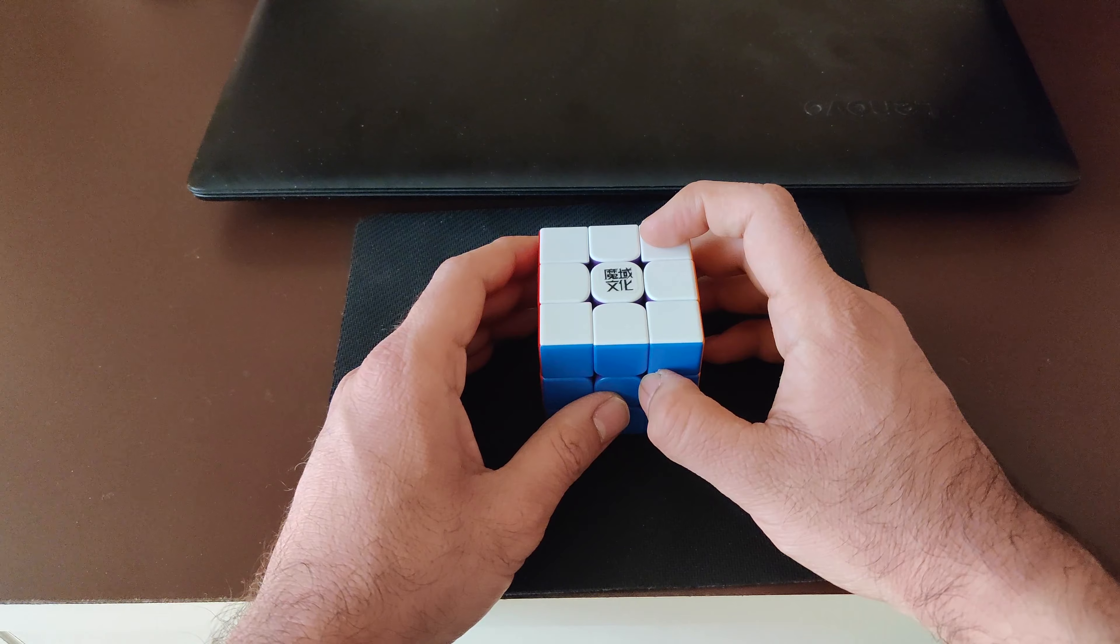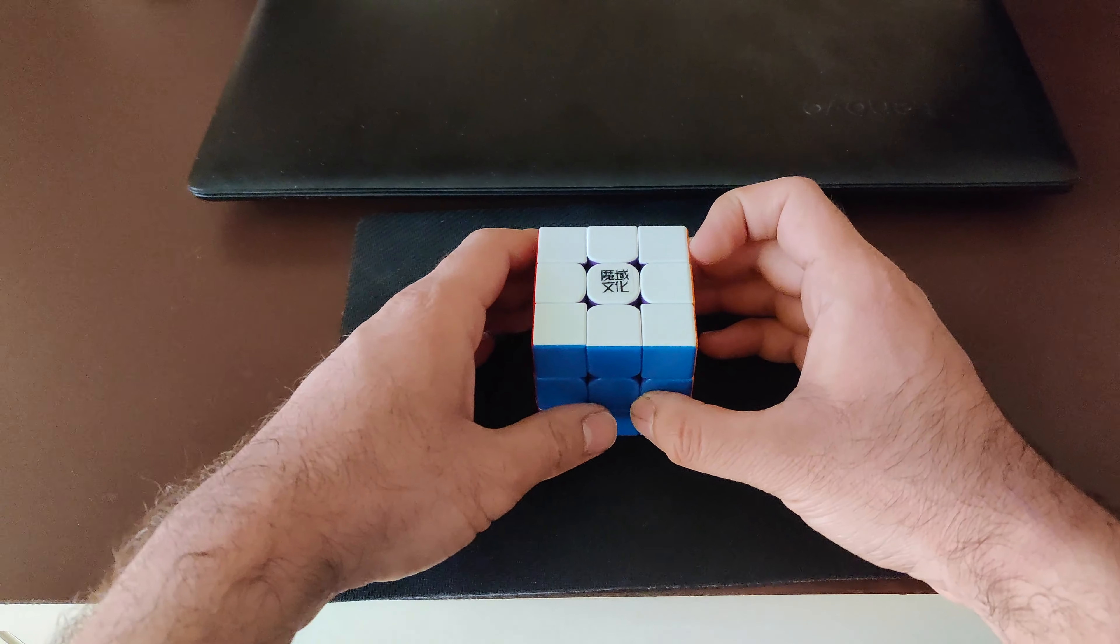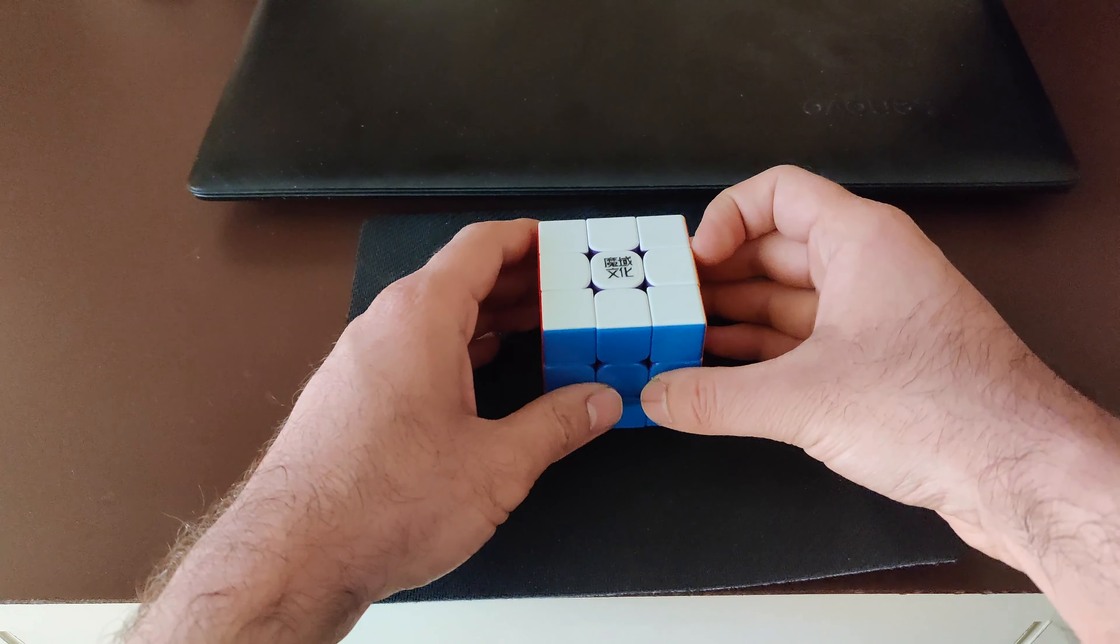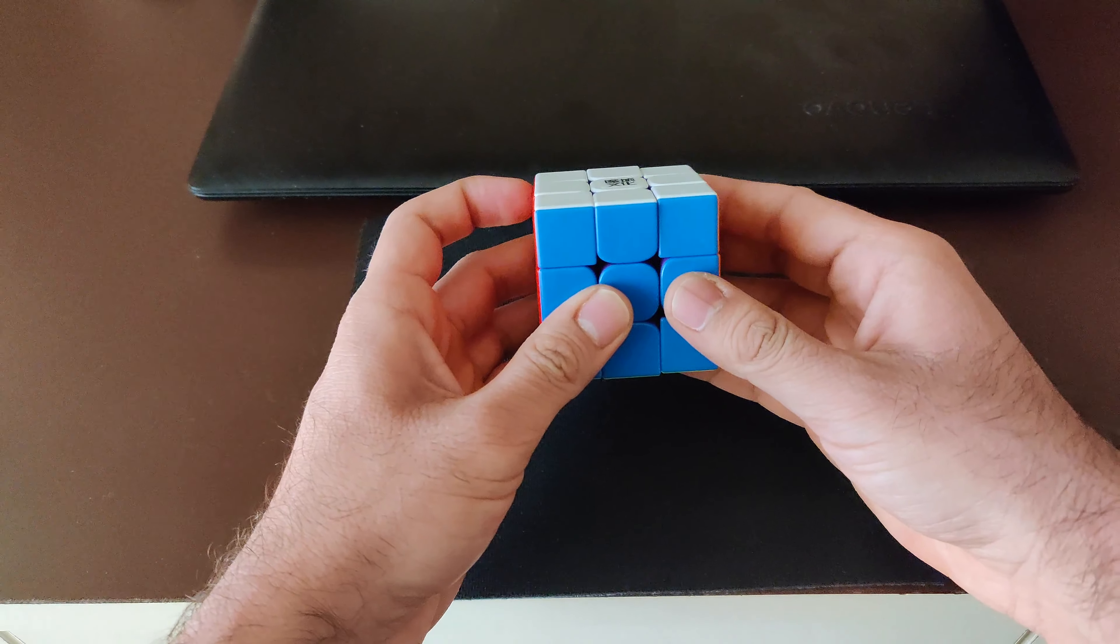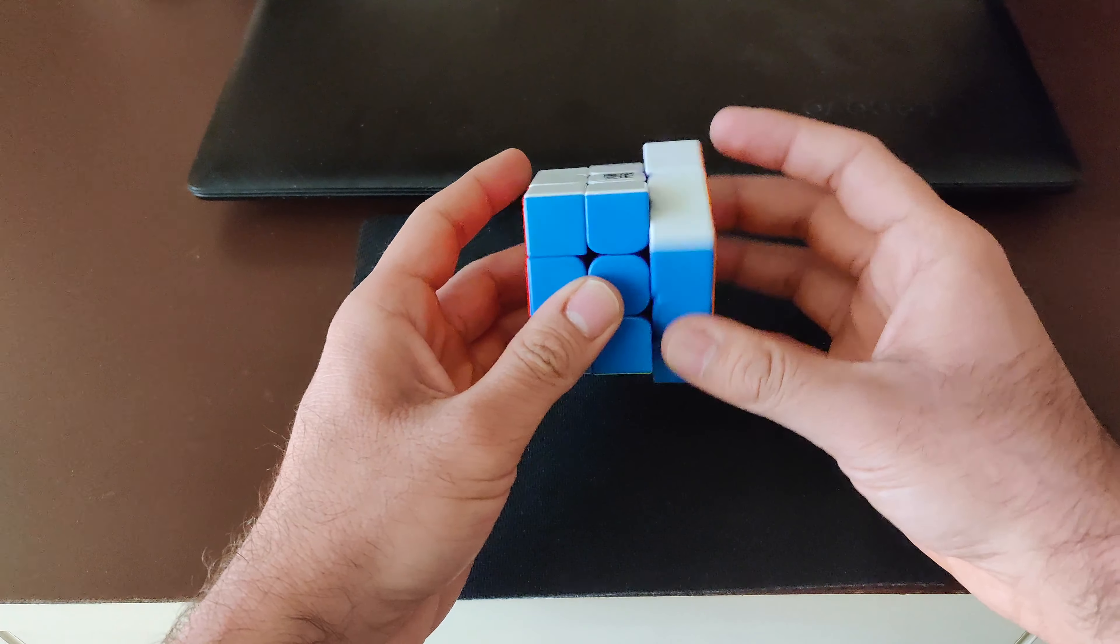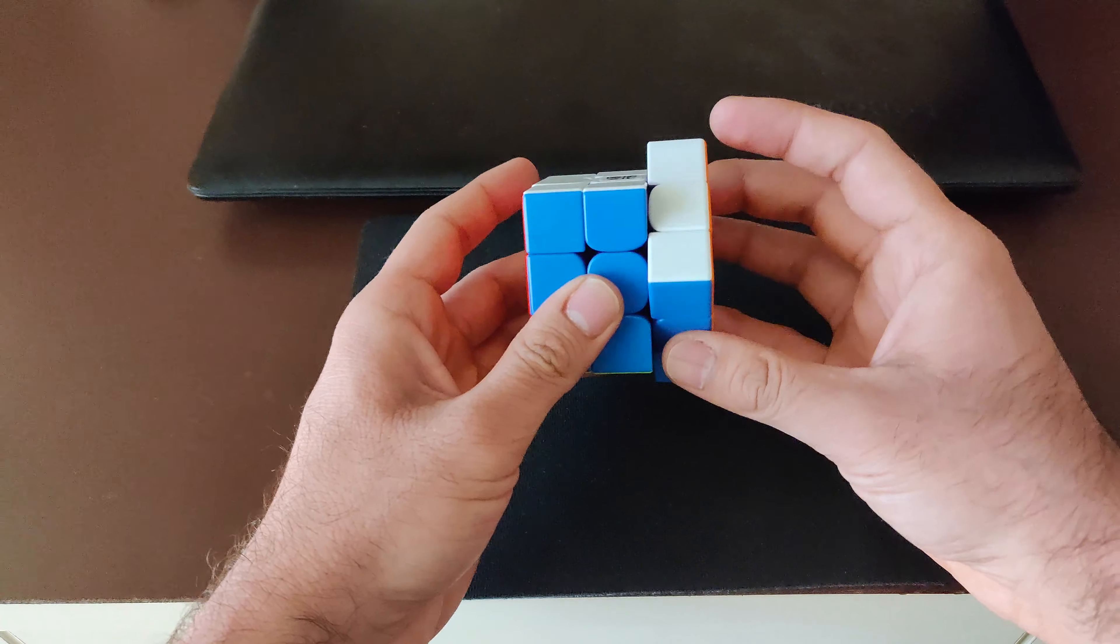The second reason I really like the cube is actually its responsiveness. So, compared to a cube like the Worm 2019, the corner cutting is a lot snappier, even for smaller cuts, even reverse.